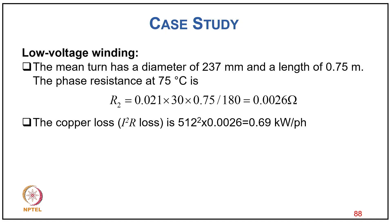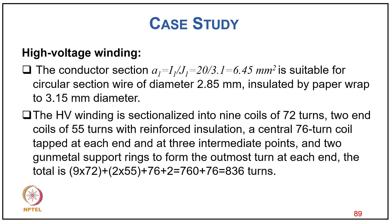The LV winding has mean turn diameter 237 mm and mean turn length 0.575 m. Phase resistance at 75°C: R2 = ρ × 0.575 × 30 / 180 = 0.0026 Ω. Copper loss = I²R = 512² × 0.0026 = 0.69 kW per phase. For the HV winding: conductor area A1 = I1/J1 = 253/1 → approximately 6.45 mm², suitable for a circular conductor of 2.85 mm diameter, insulated with paper wrap to 3.15 mm diameter.